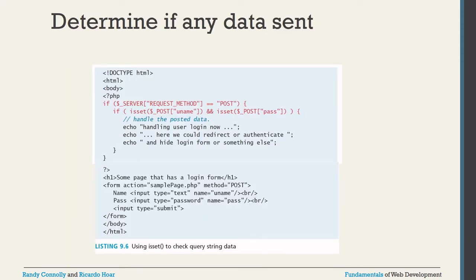Take a simple example: you have an HTML form where the action points to the same page and the method is POST. In the PHP tag we check which method was applied and whether data was sent. First, check: if $_SERVER['REQUEST_METHOD'] == 'POST'. If it is POST, then check isset($_POST['uname']) — 'uname' is whatever name attribute you gave the username input box — to verify that data is present.